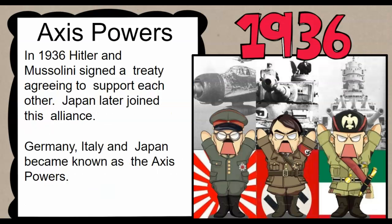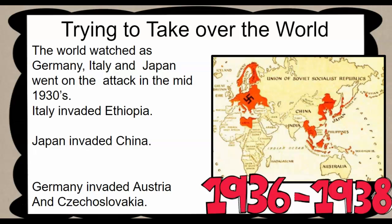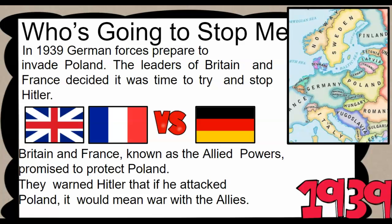Together, they signed a treaty. Hitler and Mussolini first agreed to support each other, and then Japan eventually joined. This alliance was called the Axis Powers — Germany, Italy, and Japan. They each targeted land to take over. Italy invaded Ethiopia, moving into northern Africa. Japan moved into China and took over land by military force. Germany first invaded Austria and Czechoslovakia, and then continued heading further through Europe. German forces then prepared to take over Poland.